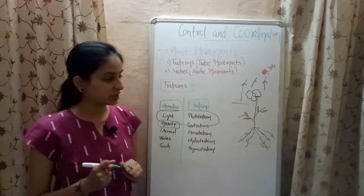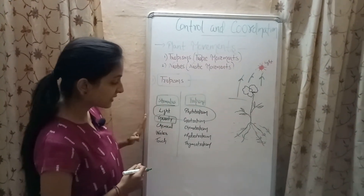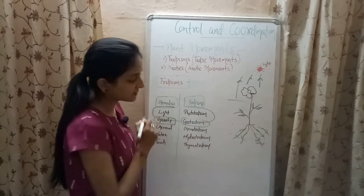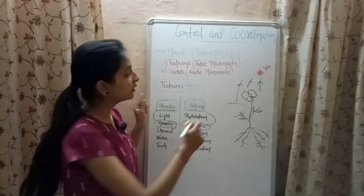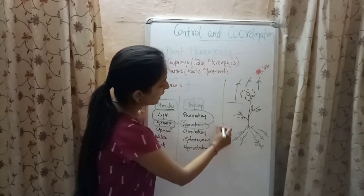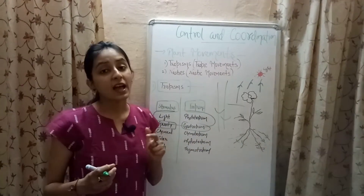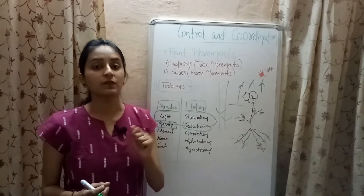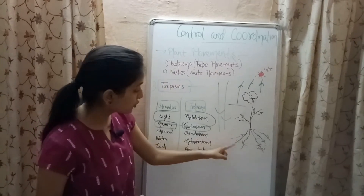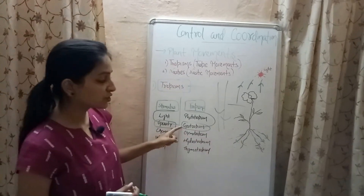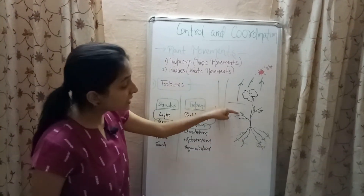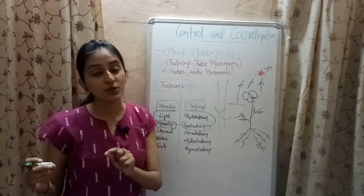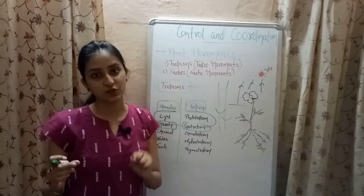When the stimulus is gravity the tropism is known as geotropism. Gravity acts in the downward direction, and since roots always grow downward, roots show positive geotropism. Stems grow in the upward direction, so stems show negative geotropism.